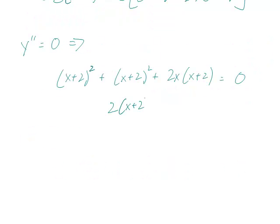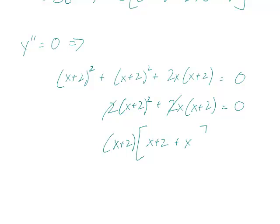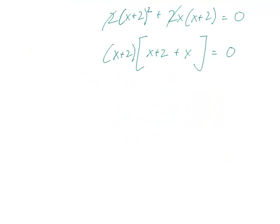That's not a cube, that should be a square. The problem is much harder with the cube. And now we can combine like terms, 2x plus 2 squared plus 2x times x plus 2 equal to 0, and even the 2's go away. We can factor out an x plus 2, so then the first term is just x plus 2 and the second term is x.